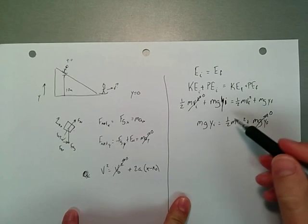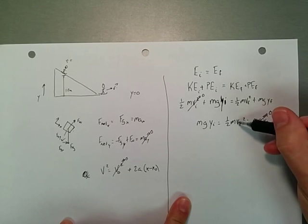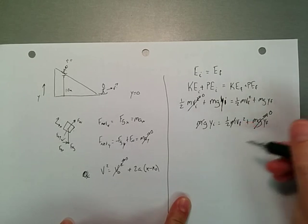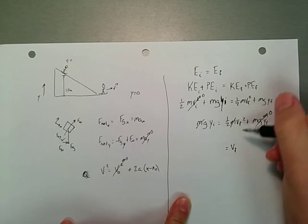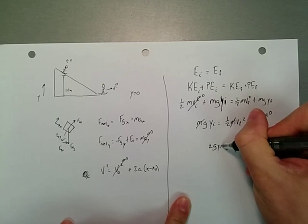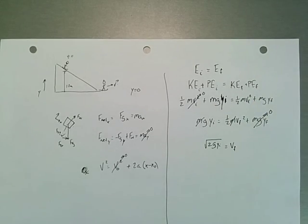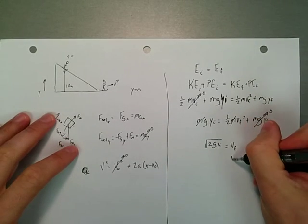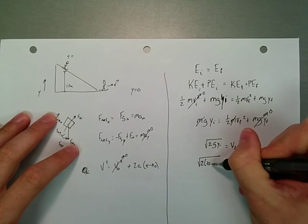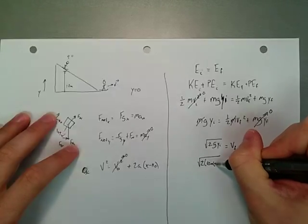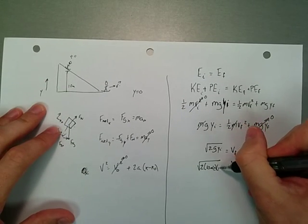So now we just have that mgy initial equals one-half m v final squared. You notice there's an m on each side. We can cancel that out. And what I find is that v final is just equal to the square root of two g y initial. Or that v final equals the square root of two times 10 meters per second squared, approximately, for gravity, and 10, which is our height, 10 meters.